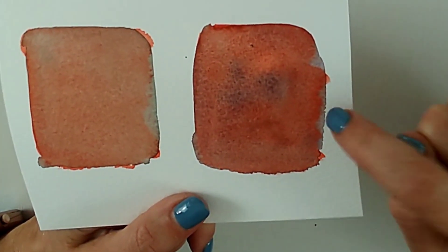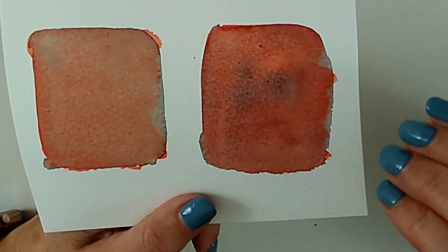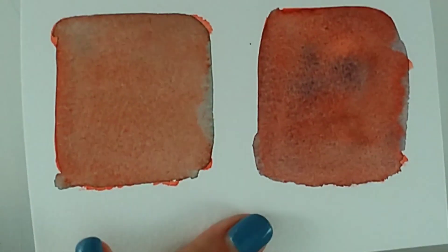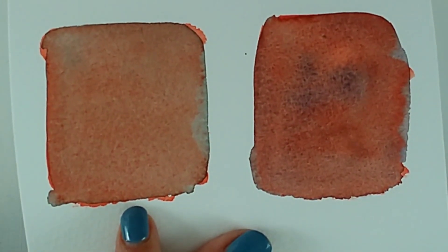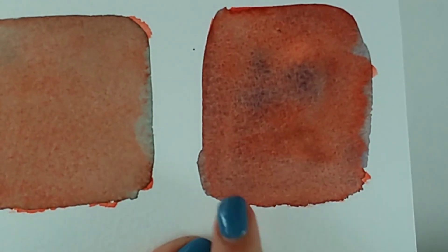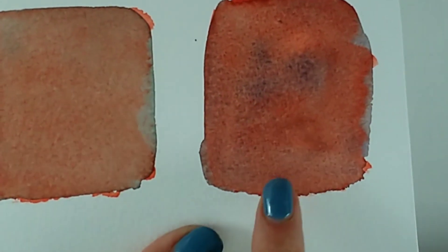And here I used ultramarine, which is a very granulating pigment. Can you see the difference? So this one has gone on lovely and clean and clear. This one here has dried unevenly because of those granular pigments.